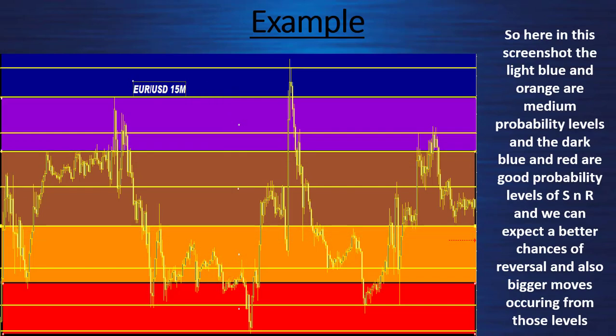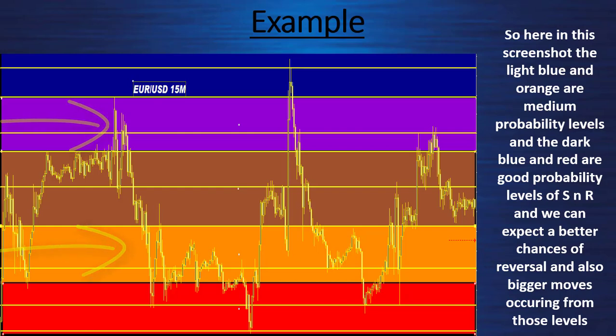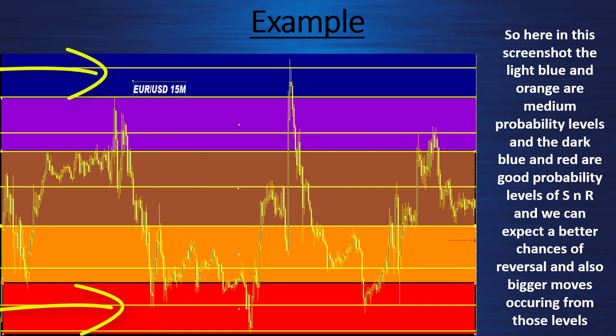In this screenshot, the light blue and orange areas are medium probability levels, and the dark blue and red are good probability levels of support and resistance. We can expect better chances of reversal and also bigger moves occurring from those extreme levels.